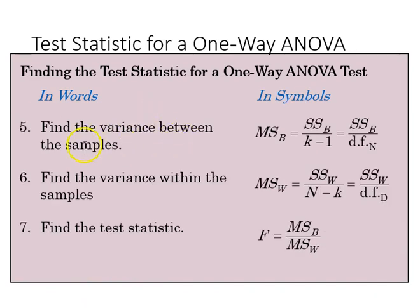With that we can find the variance between the samples, MSB, as the SSB over k minus 1, which is going to be the degrees of freedom in the numerator.